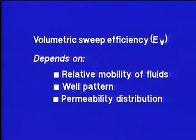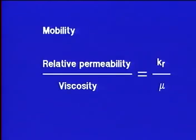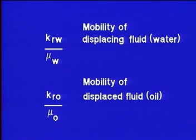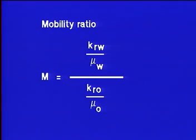Let's consider the first factor. The mobility of any fluid in a reservoir rock is its relative permeability (K_R) divided by its viscosity (μ). If one fluid is used to displace another, the ratio of the mobility of the displacing fluid to that of the displaced fluid is referred to as the mobility ratio (M).